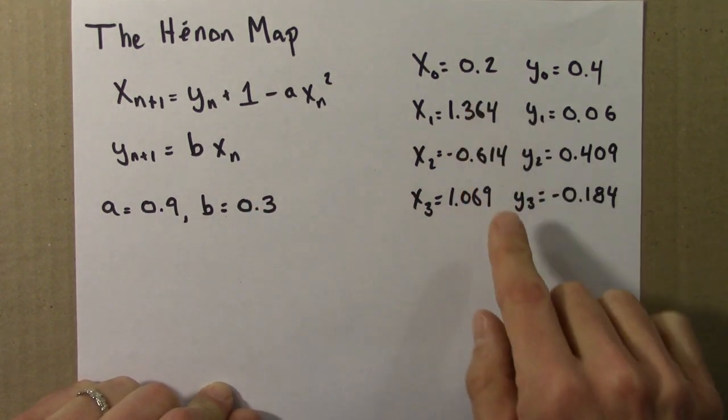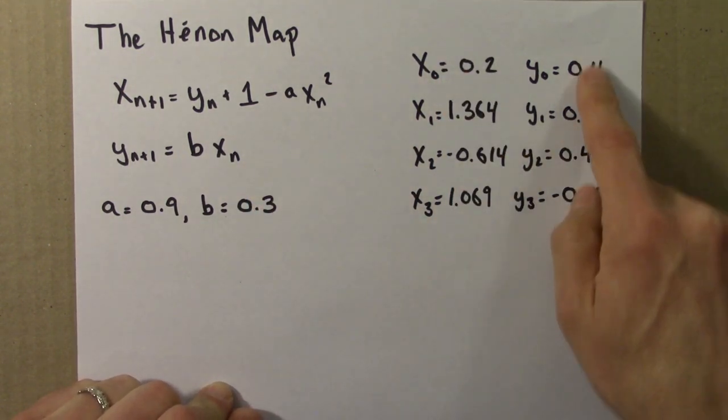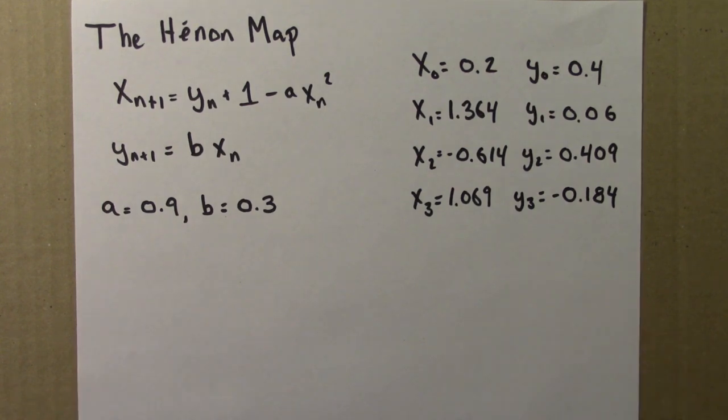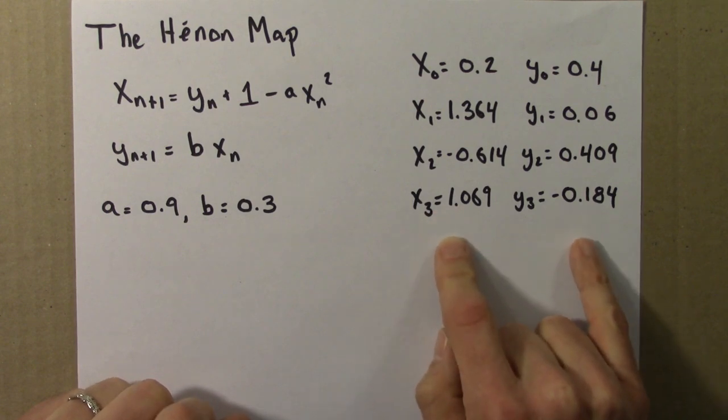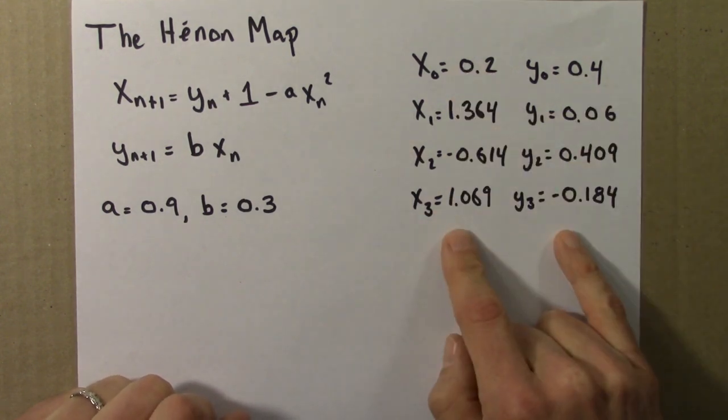And we get a time series for x and a time series for y. It's a straightforward task and very soon we'll turn to a computer to do this for us. So now that we have these numbers, what can we do?